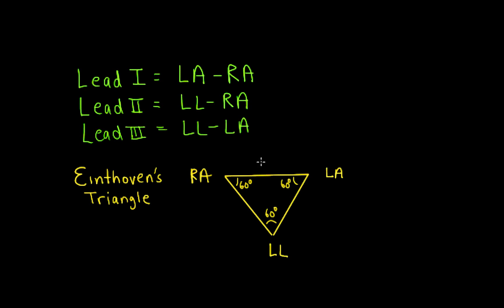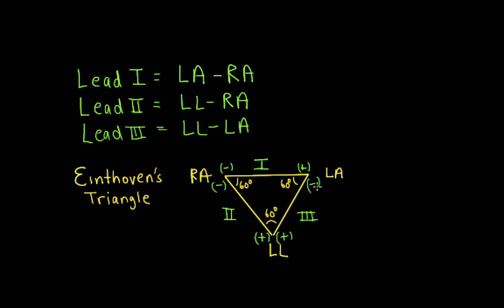Lead 1 takes the left arm electrode and subtracts the right arm electrode, so we put the positive pole of lead 1 by the left arm and the negative pole by the right arm. Lead 2 is the left leg electrode minus the right arm electrode, so the positive pole of lead 2 is down by the left leg and the negative pole is up by the right arm. Lead 3 is the left leg minus the left arm electrode, so the positive pole is again by the left leg and the negative pole is by the left arm.